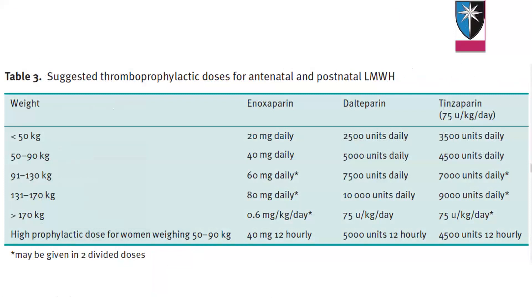The dose is according to weight: less than 50 kg — 20 mg daily; 50–90 kg — 40 mg daily; 91–130 kg — 60 mg daily; 131–170 kg — 80 mg daily; more than 170 kg — 0.6 mg per kg per day in two divided doses.